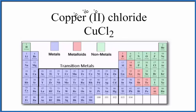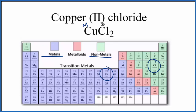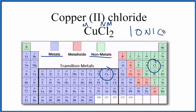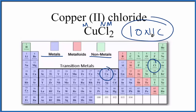If we look at the periodic table we find copper right here, and that's a metal. So we have a metal with copper and chlorine over here, which is a nonmetal. When we have a metal bonded to a nonmetal, almost always we end up with an ionic bond. So in the case of CuCl2, according to the periodic table, it's ionic.